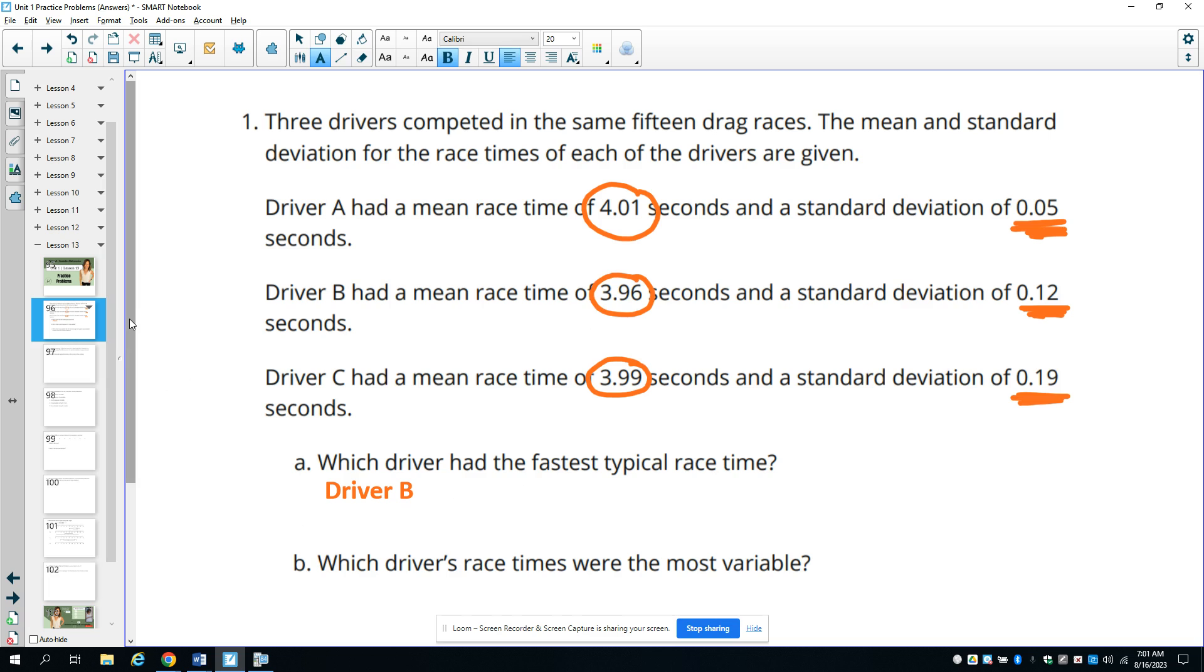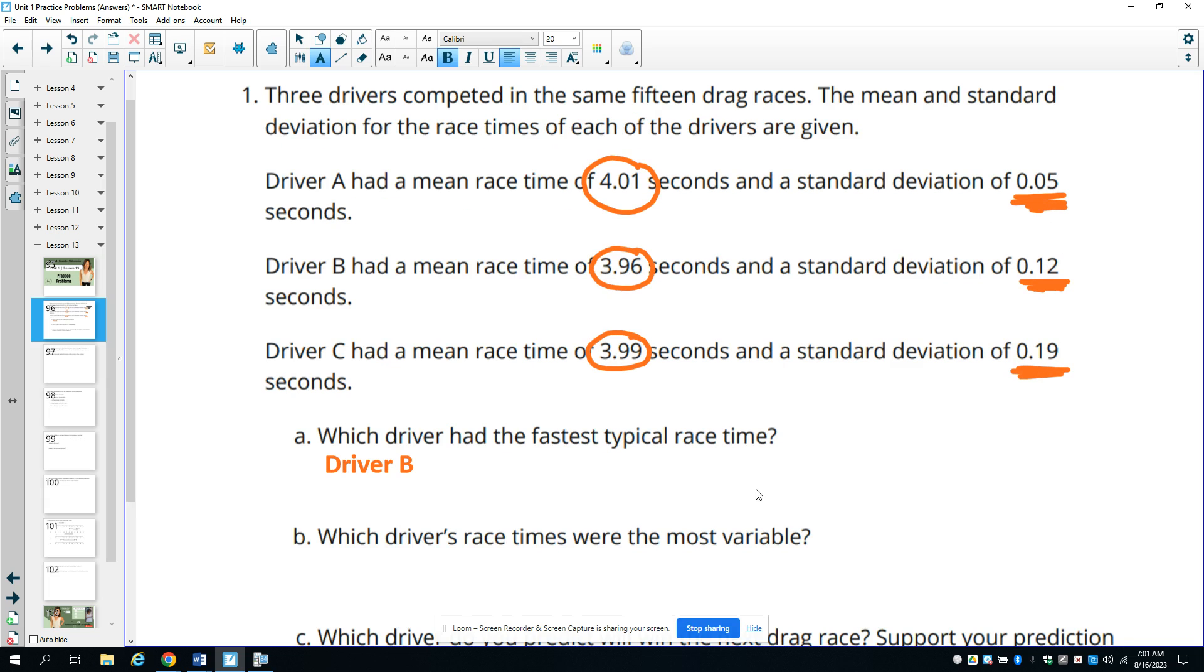Then part B asks which driver's race times were the most variable. So now you're looking at a measure of variability. So in this case, the standard deviation. And so in this case, the most variable would be the highest number. So that's going to be driver C with a 0.19 standard deviation.